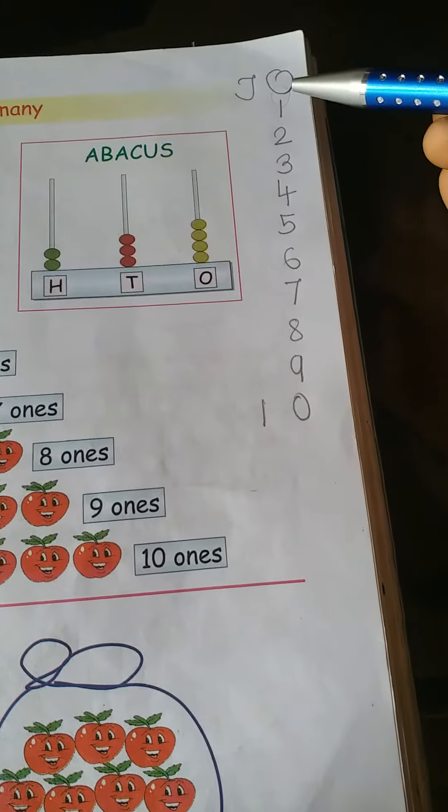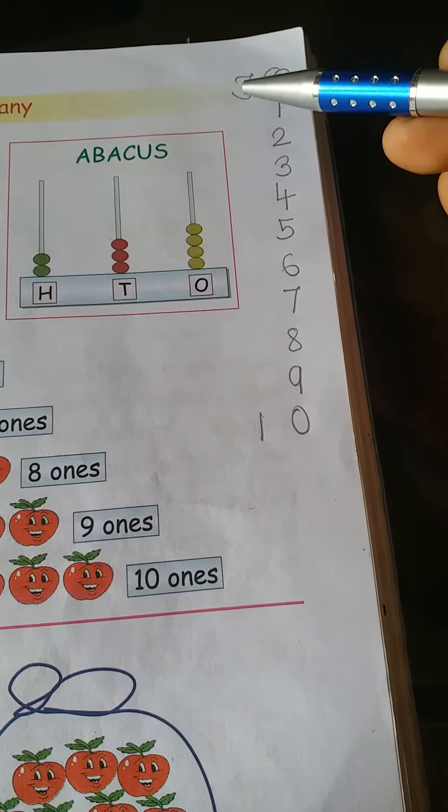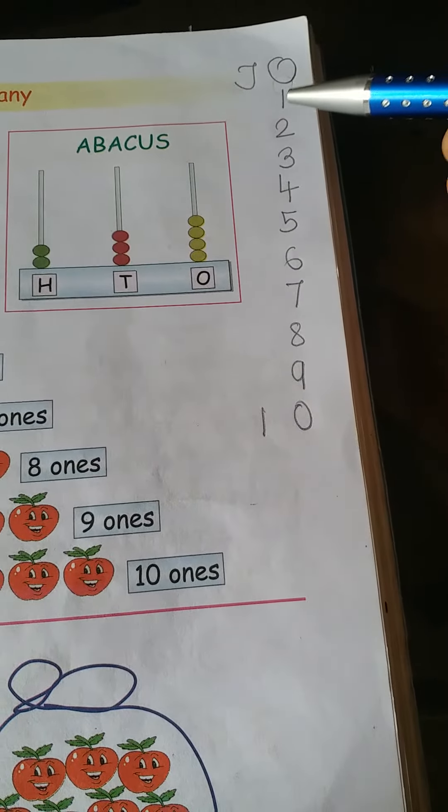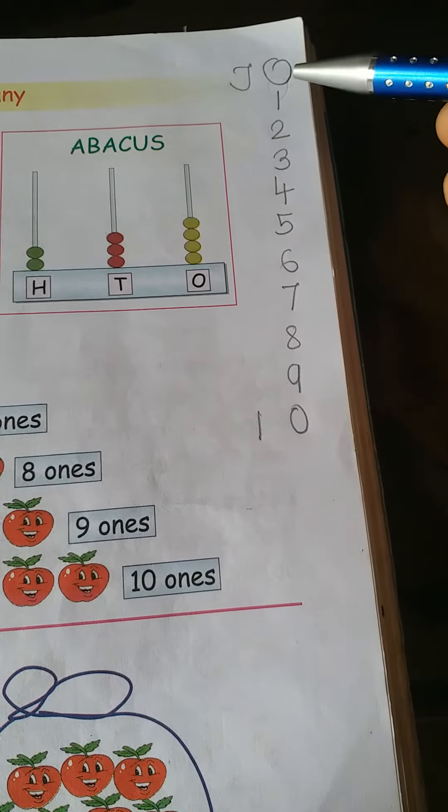Come here. Do you know? One, ten, yay. So we can say one one, two ones, three ones.